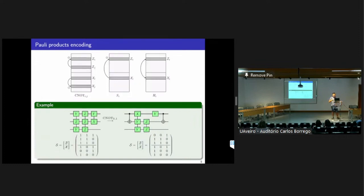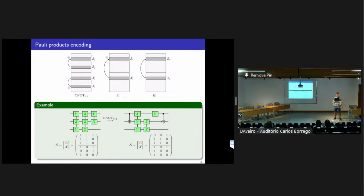We can perform operations on this sequence of parity rotations by conjugating with Clifford gates. For example, conjugating with a CNOT gate between the first and second qubit updates the matrix by taking the second row of the upper part and adding it to the first row, and for the lower part doing the inverse operation. For the S gate, we take the row of the lower part and add it to the corresponding row of the upper part. For the Hadamard gate, we simply swap the two rows.